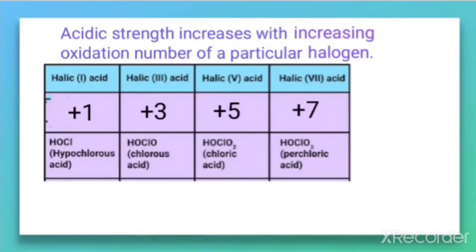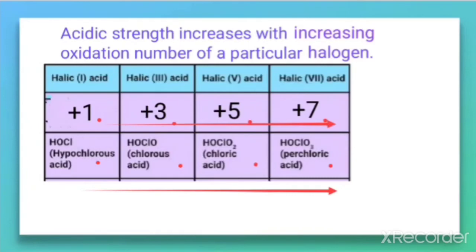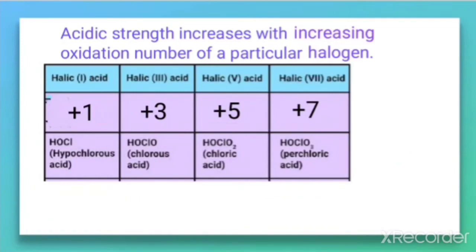When we compare the acidic strength of oxoacids of chlorine — hypochlorous acid, chlorous acid, chloric acid, and perchloric acid — the oxidation states of chlorine are +1, +3, +5, and +7 respectively. Since the oxidation state increases from +1 to +7, the acidic strength also increases from hypochlorous acid to perchloric acid. Perchloric acid is the strongest acid and hypochlorous acid is the weakest.